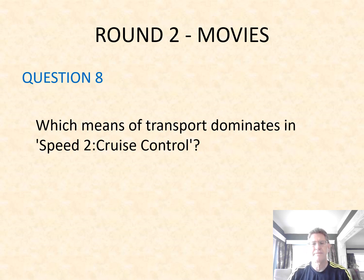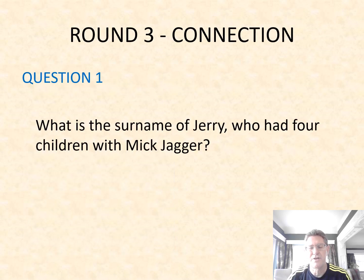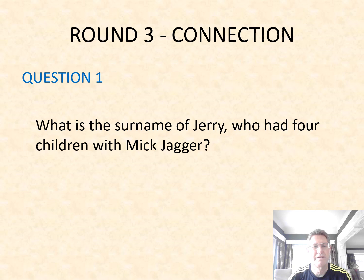Round two over, on to round three and it's our connection round. What connects all the answers? Remember your answer must fit the connection. Don't worry if you don't get the connection straight away — you'll get it as we go through the round, hopefully. Question number one: what is the surname of Jerry who had four children with Mick Jagger?